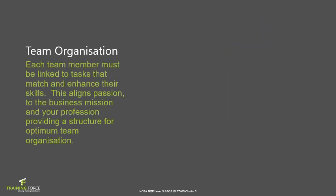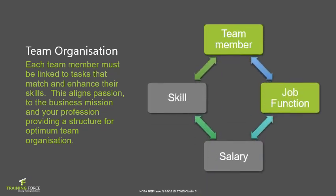Working towards outputs means you work towards a common goal. You provide a service to your organization and get paid for that level of service. Each team has team members, and that requires each team member to perform a specific task. Each team member must be linked to tasks that match and enhance their skills, aligning passion to the business mission or profession. A team member has a skill, is placed in a position, fulfils a job function, and receives a salary for that service.